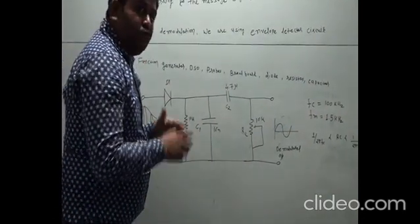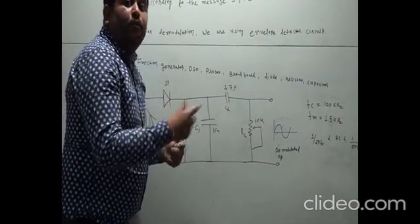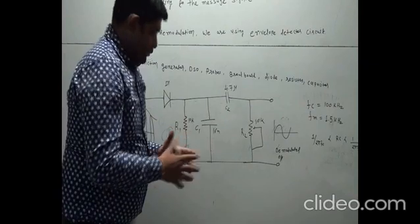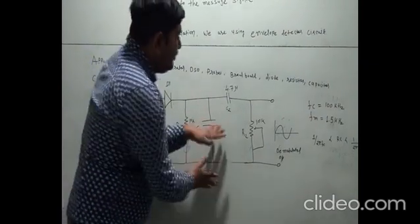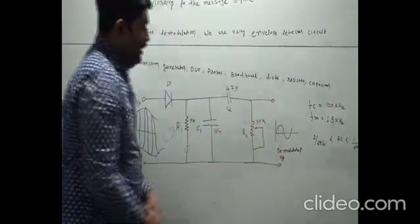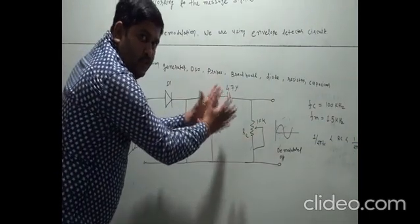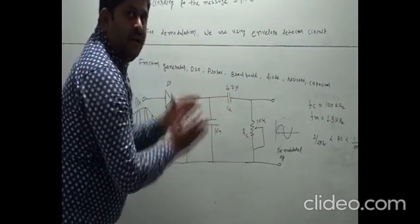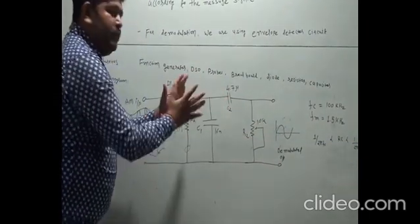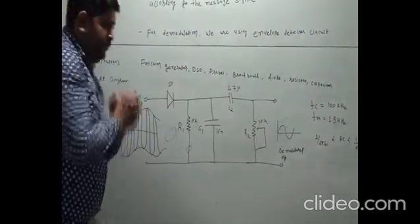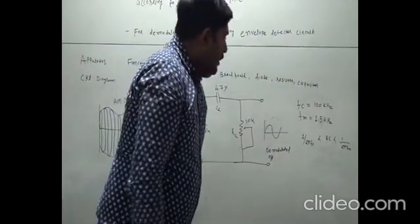This RC combination is used for reconstructing our modulating signal — that is our message signal. This capacitor is used to block the DC component of our signal. This is the output of the demodulator.